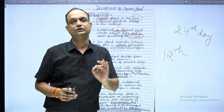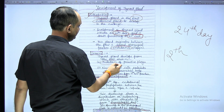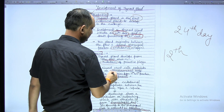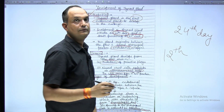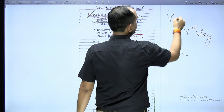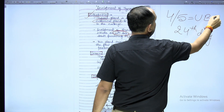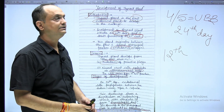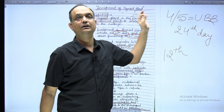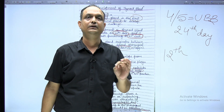When talking about sources, there are two: one is the endoderm of the primitive pharynx, and the second is the ultimobranchial bodies. The fourth and fifth pouches join to form the ultimobranchial body. Later on, the neural crest cells invaginate these ultimobranchial bodies, and that is why the neural crest cells are going to form the parafollicular cells of the thyroid gland.